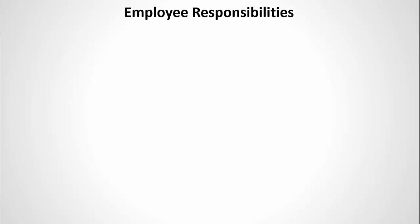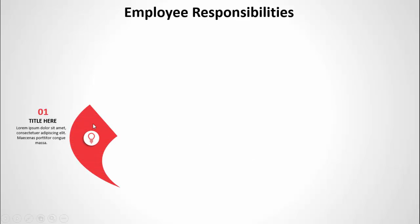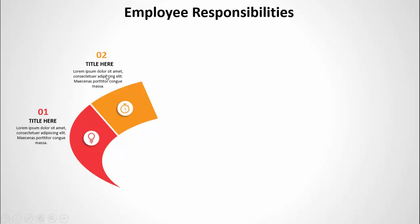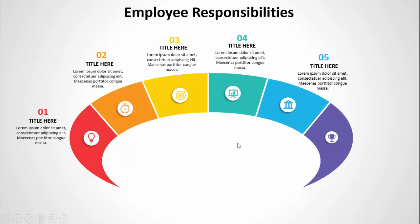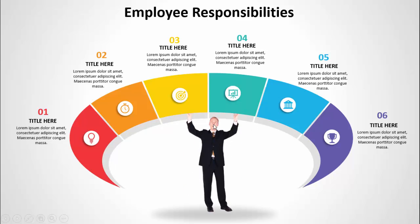In today's tutorial I'm going to show you how to create a six-option employee responsibility slide in PowerPoint. When I click it will show option one with a different color background — here you can add an icon, an option number title, and detail text. When clicked it shows a different color combination for options two, three, four, five, and six. A shadow effect has been added as well.